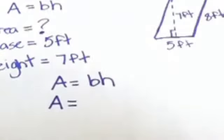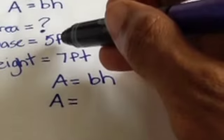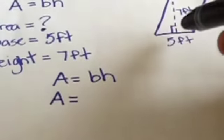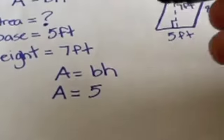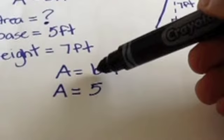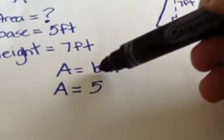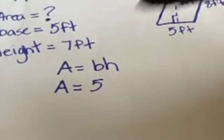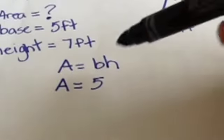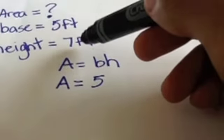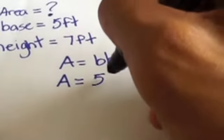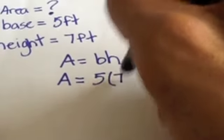A is what we're trying to figure out so we just rewrite it. We're going to substitute in 5 for B because we figured from looking at the figure that the base is 5 feet. We know that when two variables are together with no operation in between, or a variable and a number, that's multiplication. Since H represents 7 feet, we're going to multiply that by 5.